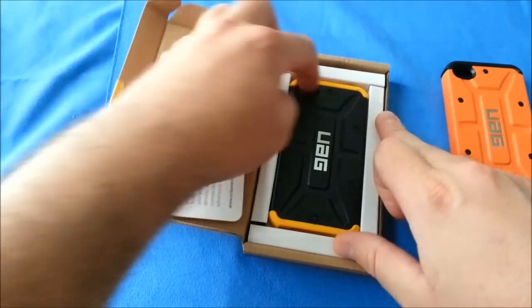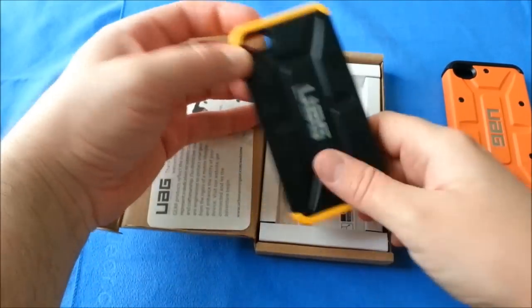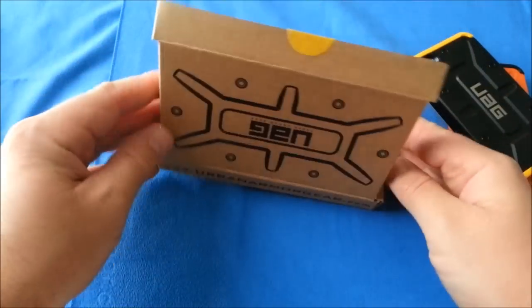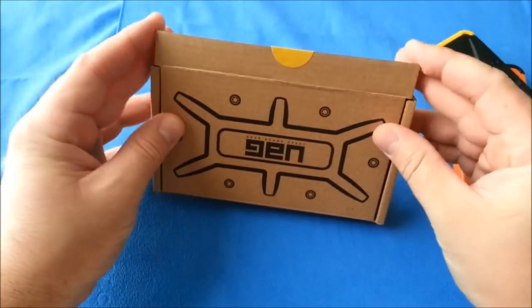Now again, here is the black and yellow. Same thing: screen shield, microfiber cloth, and squeegee with that one as well. Let's go ahead and close this up and get these out of the way.